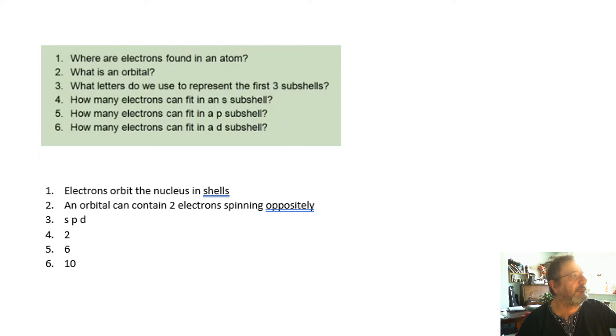Electrons are found in shells orbiting the nucleus. An orbital can fit two electrons, which are spinning oppositely. So it's kind of like a space for two electrons. Electrons have this property called spin. And two electrons spinning opposite each other is a way of imagining what an orbital is.